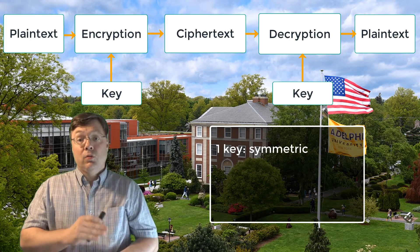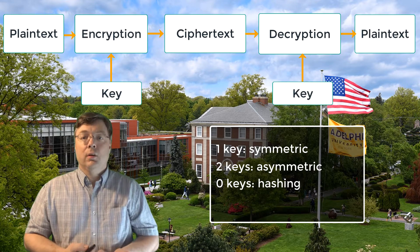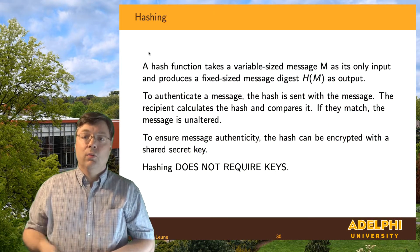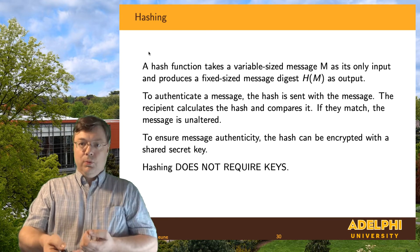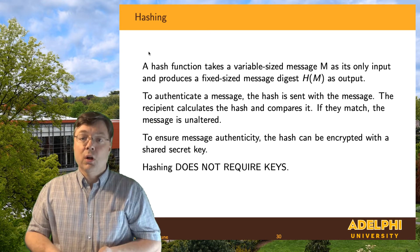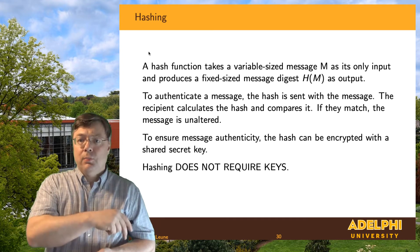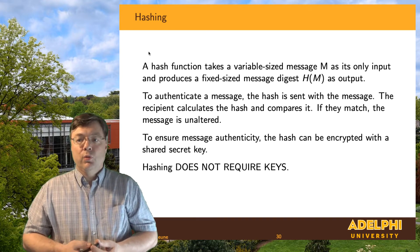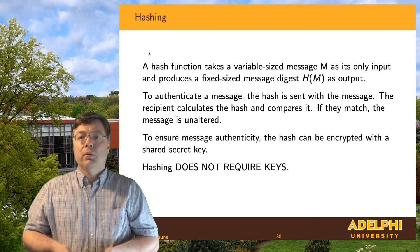Symmetric encryption uses one key; asymmetric encryption uses two keys. There is also a mechanism that uses no keys at all, and that is called hashing, or creating a message digest. In a message digest, I can take a message, process it, and transform it into a different output without needing a key. Now, that should raise some alarm bells, because Kirchhoff's principle states that the only thing that needs to be secret to protect the message is the key. Hash functions are not meant to ensure confidentiality — what they are meant to do is create an abstract of the message, basically a fingerprint, a shortened version of what the original message looks like.